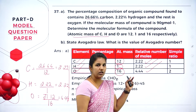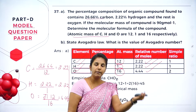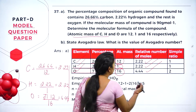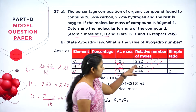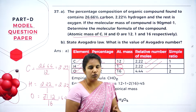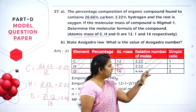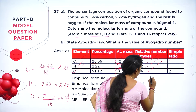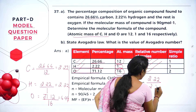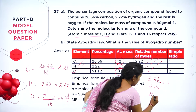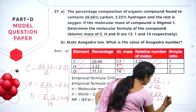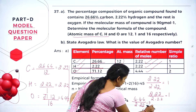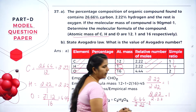To make the simple ratio, identify the smallest value among the relative moles — which is 2.22. Divide all values by 2.22: carbon gives 1, hydrogen gives 1, and 4.44 ÷ 2.22 gives 2. So the ratio is 1:1:2. Make a column: write the elements, the percentage, the atomic mass, then calculate the relative moles by dividing percentage by atomic mass, and finally divide by the smallest to get the simple ratio.